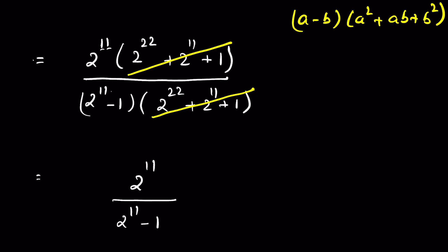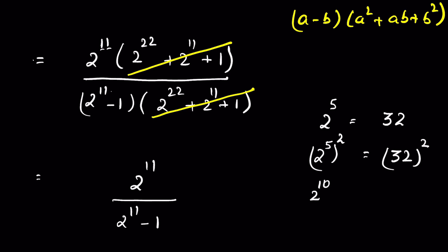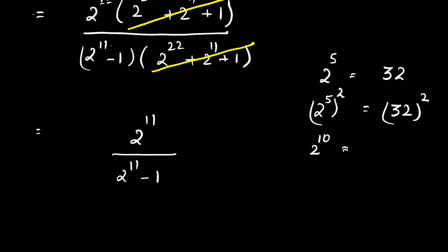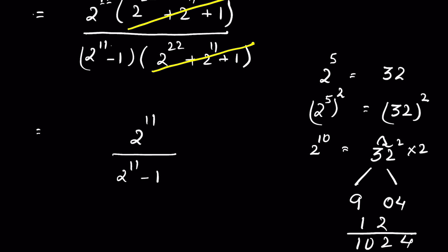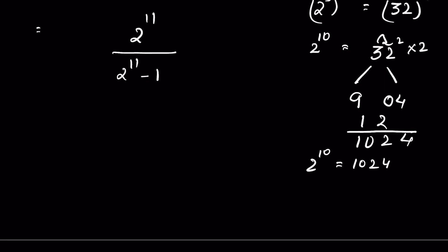Now we need to calculate 2¹¹. We know 2⁵ = 32, so 2¹⁰ = (2⁵)² = 32². To find 32²: square the units digit 2 → write 04; square the tens digit 3 → 9; multiply the two digits 3 × 2 = 6, then double it to get 12. Adding gives 2¹⁰ = 1024. Therefore 2¹¹ = 1024 × 2 = 2048.